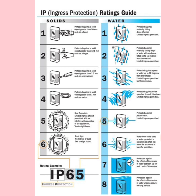Number two talks about protection when falling drops are at 15 degrees tilted, number three covers up to 60 degree inclination, and number four covers splashes coming from all directions. Number five means the object can withstand a jet of water, and number six covers heavy seas or a powerful jet. Number seven is protection against the effect of immersion up to 50 centimeters for one hour and 30 minutes, whereas number eight covers protection against immersion for long duration.